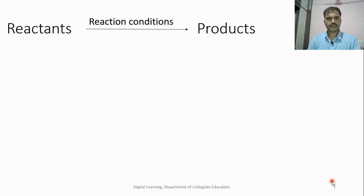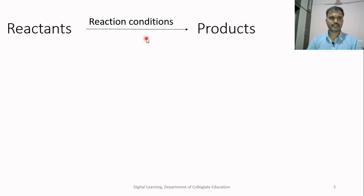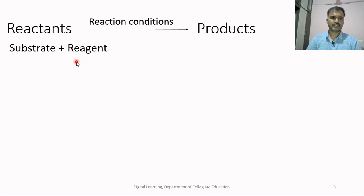Let us consider a chemical equation. It is a symbolic representation of a chemical reaction, which includes the reactants, products and the reaction conditions to be maintained as well as the energy change associated with the chemical reaction. The reactants usually consist of two species: substrate and reagent. Substrate is one which gets attacked during the chemical reaction. Reagent is a species which attacks the substrate.